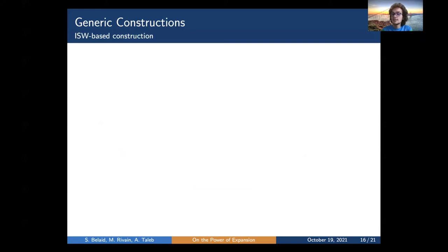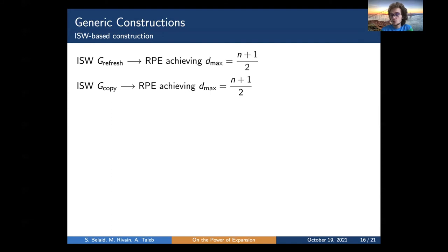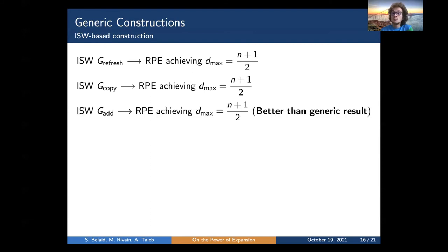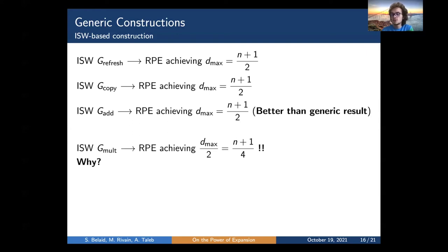With these generic constructions for add and copy gadgets, we look for multiplication gadgets in the state of the art. Using the widely known ISW multiplication and refresh gadgets: we prove the ISW refresh gadget achieves D_max equal to (N+1)/2, leading to the ISW-based copy gadget also achieving maximal amplification order. We also prove the ISW-based addition gadget achieves the maximal amplification order — better than the generic bound. However, the ISW multiplication gadget only achieves half of the desired maximum amplification order, a limitation common to other multiplication gadgets in the state of the art.